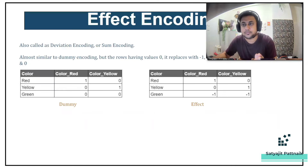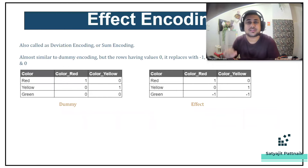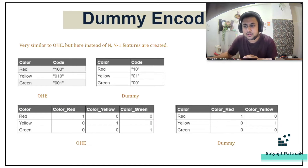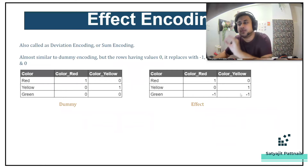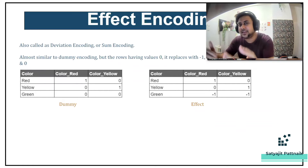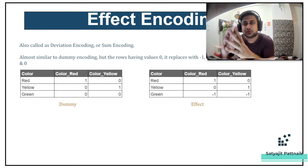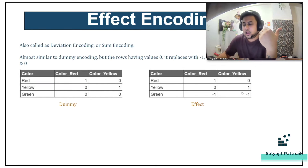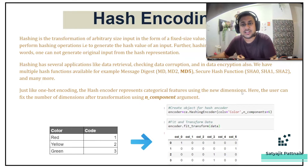Effect encoding, also called deviation encoding or sum encoding, is very similar to dummy encoding. The only difference is that the rows which have all zeros in dummy encoding are converted to minus one in effect encoding. There is no thumb rule in machine learning — you always have to hit and trial, try different encodings and see if your model deteriorates or performs better.